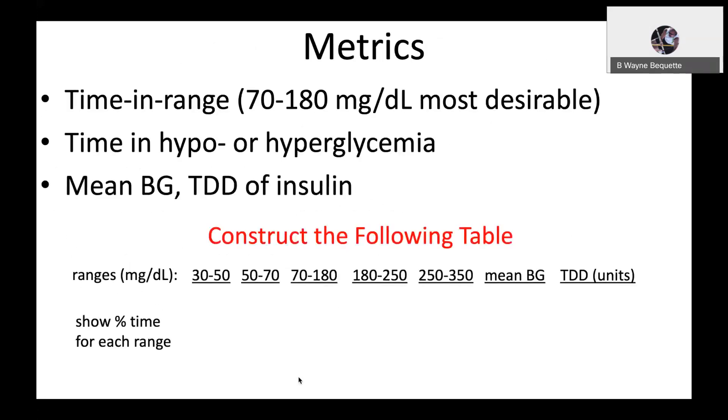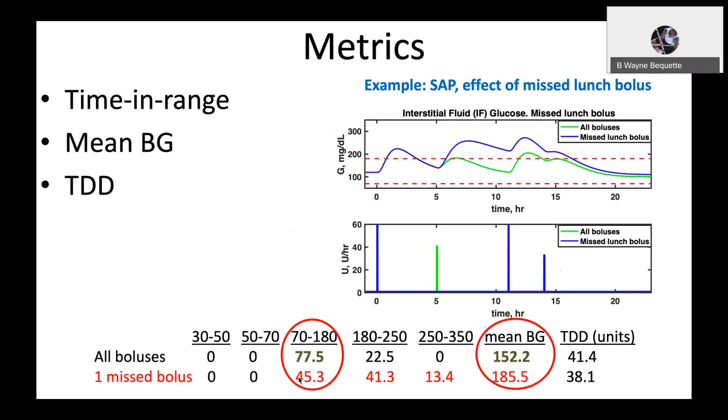Typical metrics that are used to understand how well an individual is controlling their blood glucose include the time in range, and the range of 70 to 180 milligrams per deciliter is most desirable, the time in hypo or hyperglycemia, that is when you're outside the range of 70 to 180, the mean blood glucose throughout the day, and the total daily dose of insulin. What we do is we construct a table where we show for each of these ranges, the 30 to 50 hypo range, 50 to 70 slightly hypo, the desirable 70 to 180, et cetera, the amount of time, the percent of time that we spend in each of those ranges, as well as the mean blood glucose and the total daily dose.